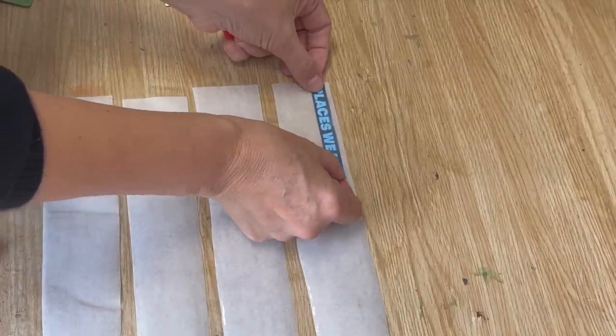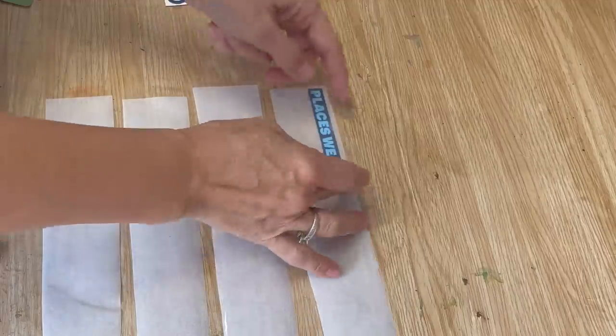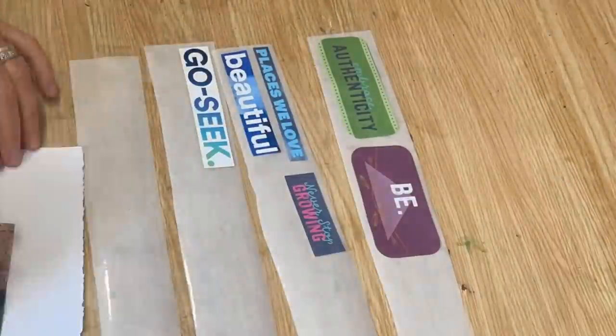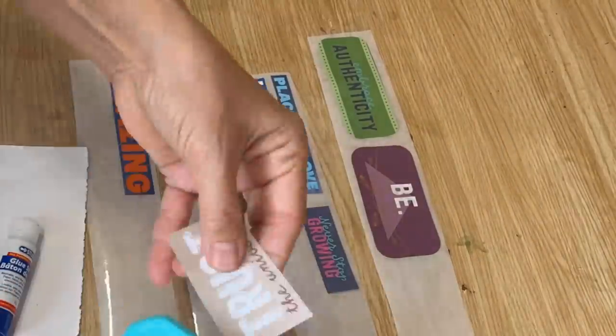I put a little bit of glue stick on the back of that magazine quote and I'm gonna stick it on top of that packing tape. This will just help keep them in place until we finish the next step.